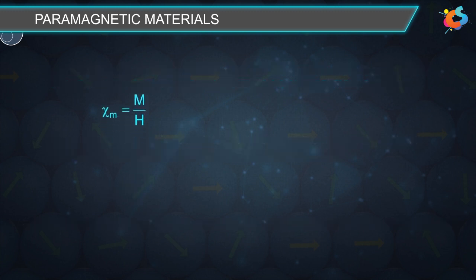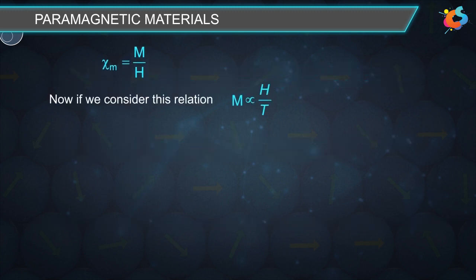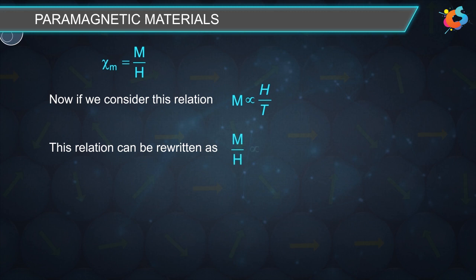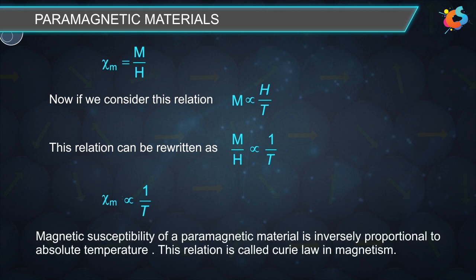Considering the relation M ∝ H/T, this can be rewritten as M/H ∝ 1/T. Replacing M/H with magnetic susceptibility, we can say that the magnetic susceptibility of a paramagnetic material is inversely proportional to absolute temperature. This relation is called Curie's law in magnetism.